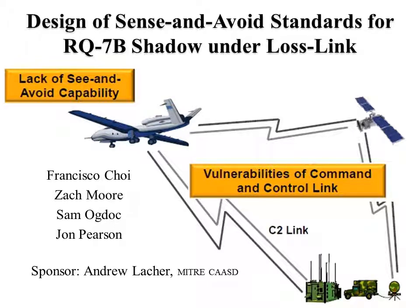Welcome. We're presenting the design of Sense and Avoid systems for the RQ-7B Shadow, operating under Lost Link. Team members are Francisco Choi, Zach Moore, Sam Mogdok, and myself, Jonathan Pearson. I'd like to thank our sponsor, Andrew Latcher from the MITRE Corporation, who was instrumental in helping us develop and progress through this project.